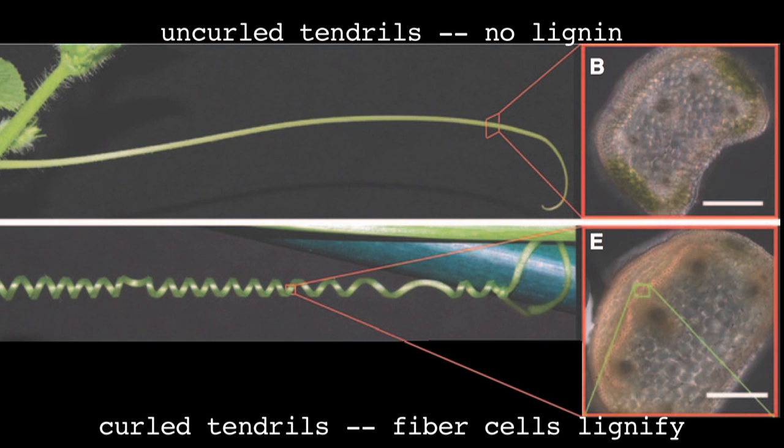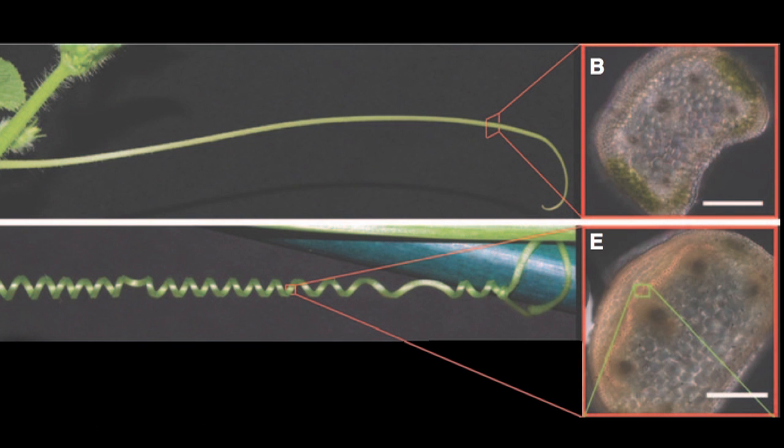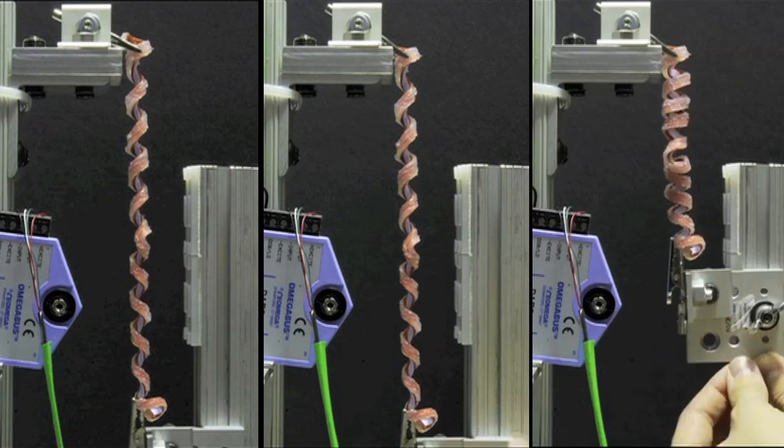When the researchers replicated these two properties, the stiffness and the uneven sides, in their prosthetic tendril, it behaved just like a real one, including the perversion and the overwinding when they pulled on it.